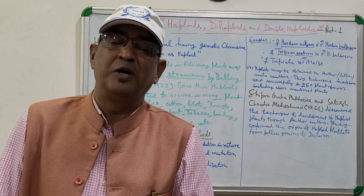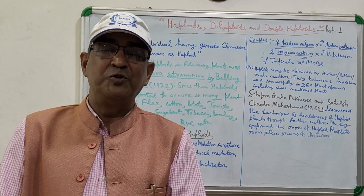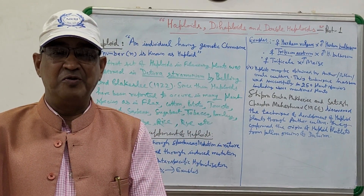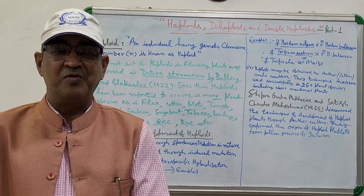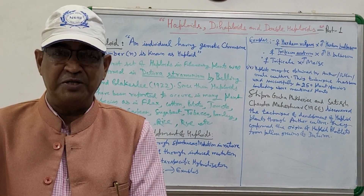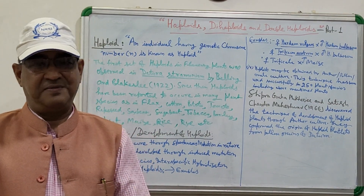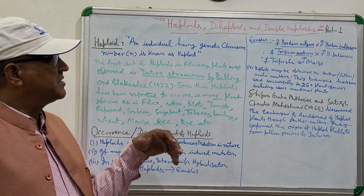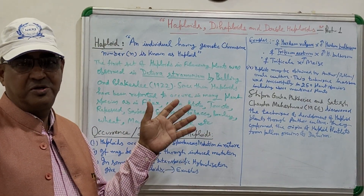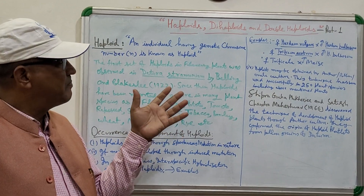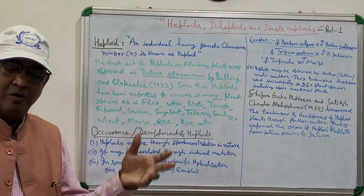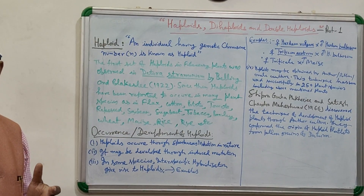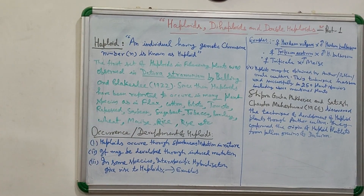So you have seen what is meant by haploid, how you get it, and how you can develop it — all these things have been described. Now I will be discussing more about dihaploid and double haploid, and then going into other parts one by one. Thank you very much.